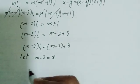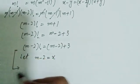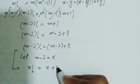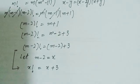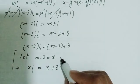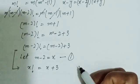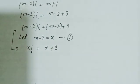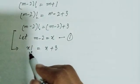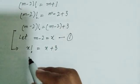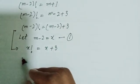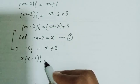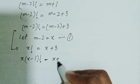Now I let m minus 2 equal to x. Replacing this substitution, the equation becomes: x factorial equals x plus 3. Let's take m minus 2 equals x as equation number 1. So x factorial equals x plus 3, which I can write as x times (x minus 1) factorial equals x plus 3.